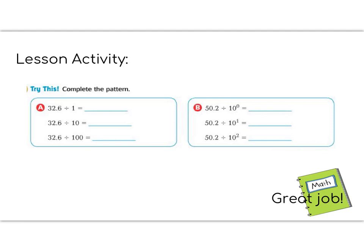Now it's your turn for the lesson activity. The lesson activity is the try this section from your math pages. You do not need to write this in your math notebook. You just need to fill them out on the pages. On part A, we are dividing by 1, 10, and 100. And remember that when we divide, our decimals are going to move to the left. So anything divided by 1 stays the same. So I have 32.6. Now this one, my decimal is going to move one place to the right because I have 1 zero. So now I'm going to have 3.26.